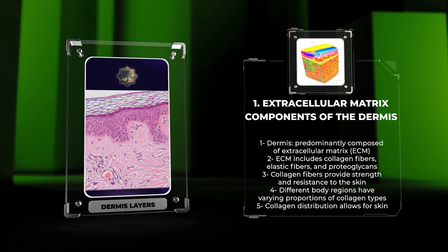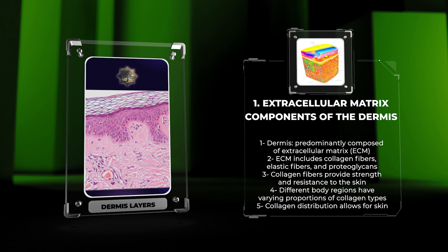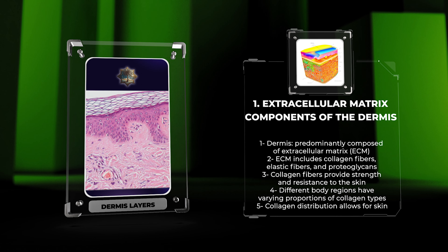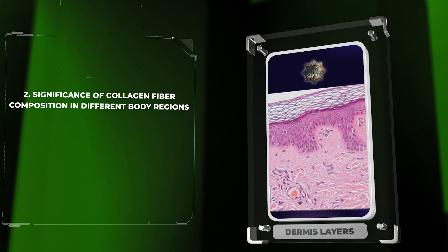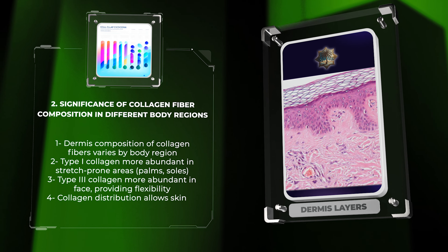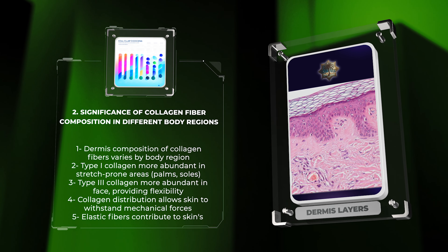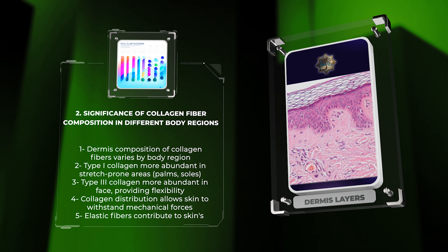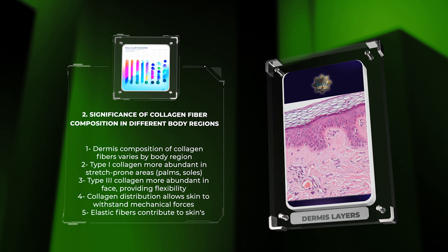These collagen types contribute to the unique properties of skin in different areas. The composition of collagen fibers in the dermis varies depending on the body region. For instance, in areas prone to stretch and movement, like the dermis of the palms and soles, there is a higher proportion of type I collagen, which imparts greater tensile strength.